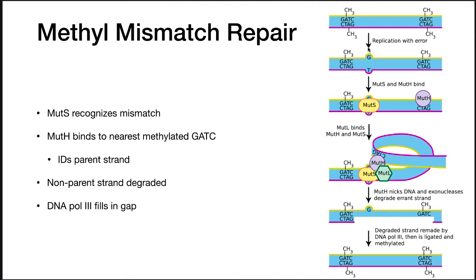A third system is methyl mismatch repair, which involves three enzymes. MUT-S comes in first and binds to the replication error — if there's a replication error, it won't base pair correctly, and MUT-S recognizes and binds the modified structure. MUT-H then binds to the nearest GATC that is methylated. MUT-H and MUT-S form a loop structure, MUT-L joins them, MUT-H nicks the DNA, and exonuclease then degrades the strand. When DNA is first replicated, it is not methylated at GATC sites, so MUT-H only binds the methylated site, allowing the system to recognize the newly synthesized strand, which gets degraded and then filled in by DNA polymerase.